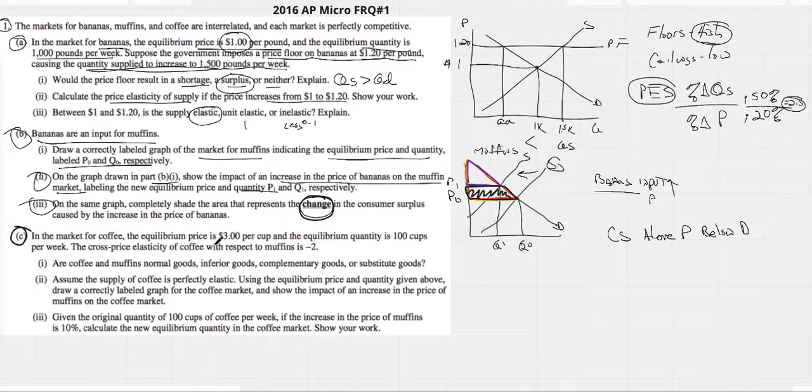In the market for coffee, the equilibrium price is $3 per cup, and the equilibrium quantity is $100. They're giving us the cross price elasticity is a negative 2. Now, knowing that cross price, or XED, is a negative 2 lets me know immediately that they're complements.